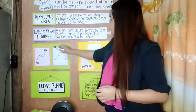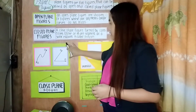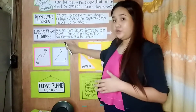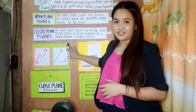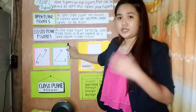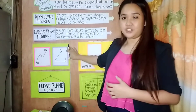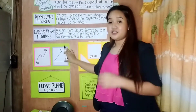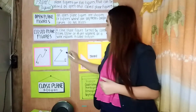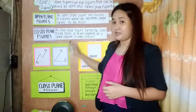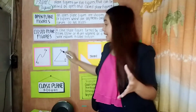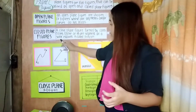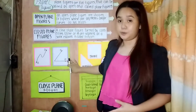How about this figure? Do you know what this figure is? Very good — it's an angle. Do you think that an angle is an example of open plane figures? Very good. An angle is also an example of open plane figures because it is formed by connecting lines. It starts with one point and ends with another point.